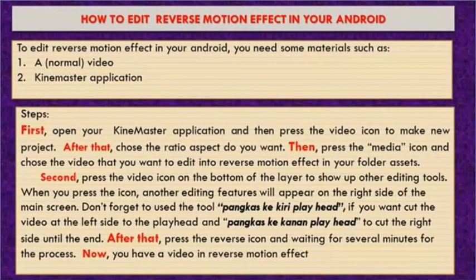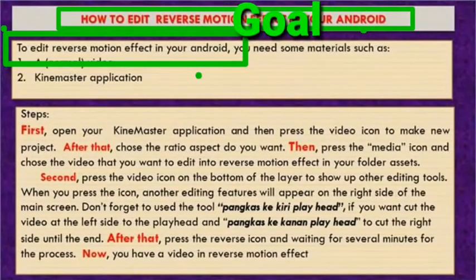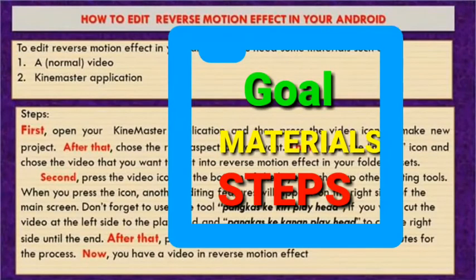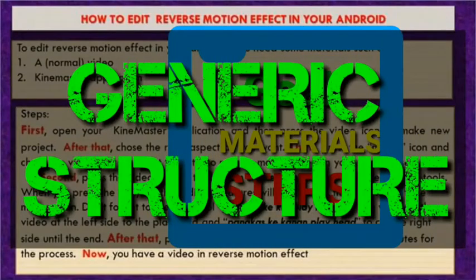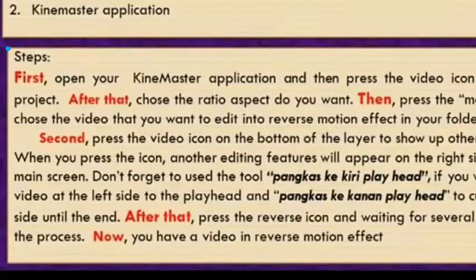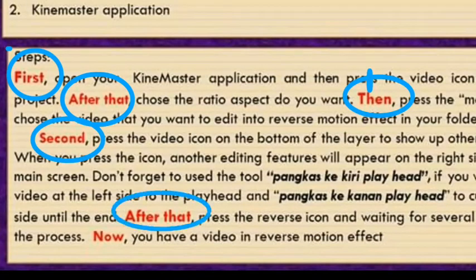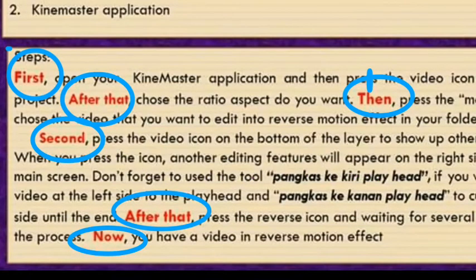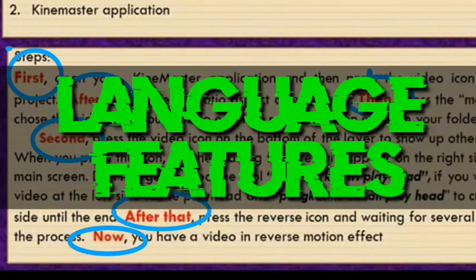I start by telling you the goal, then material, and then steps. These three parts could be said as the generic structure of procedure text. I use words like first, after that, then, and so on as conjunctions in order to make my paragraph coherent. Of course, most procedure texts use this, so we can call it a language feature of procedure text.